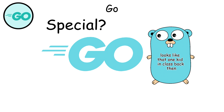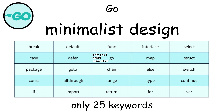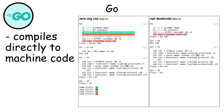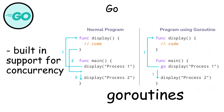What makes Go special is its simplicity and performance. Go has a minimalist design with only 25 keywords, compared to over 80 in languages like C++. Go compiles directly to machine code, so it's extremely fast, and it has built-in support for concurrency through Go routines.